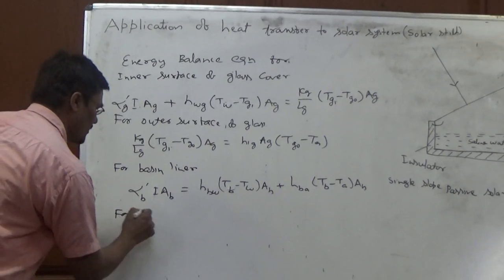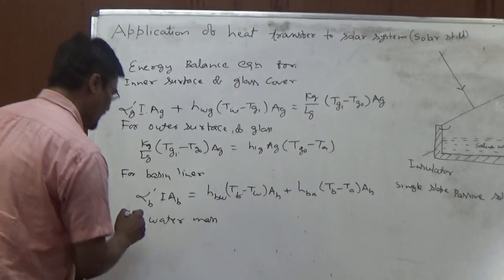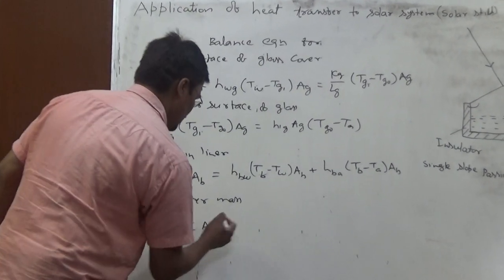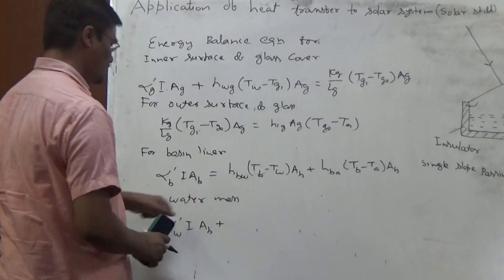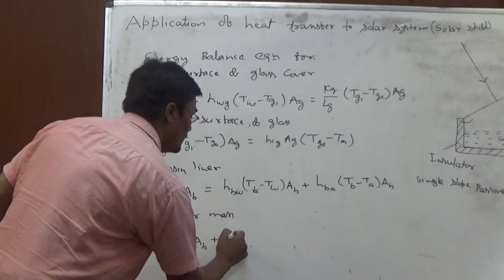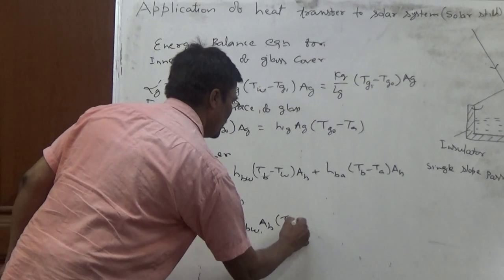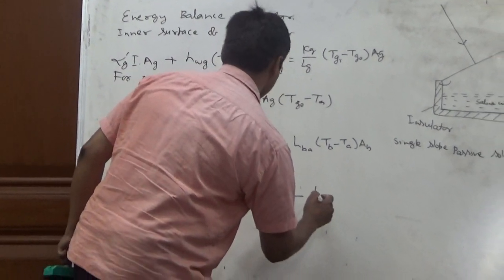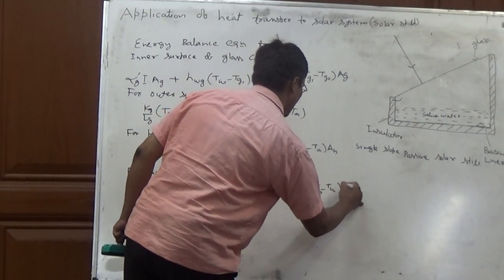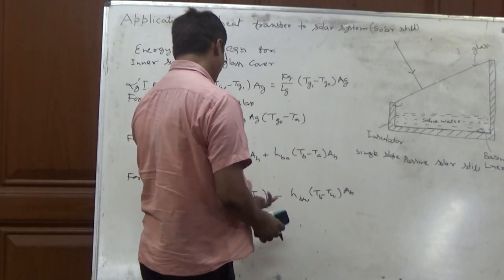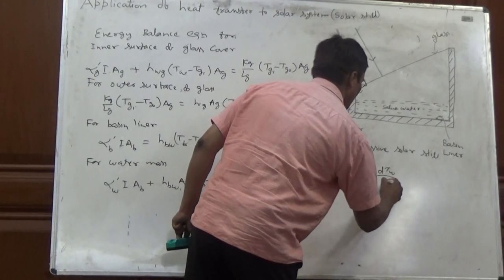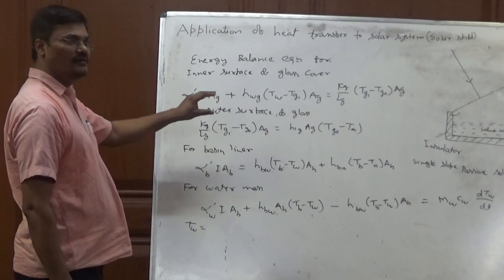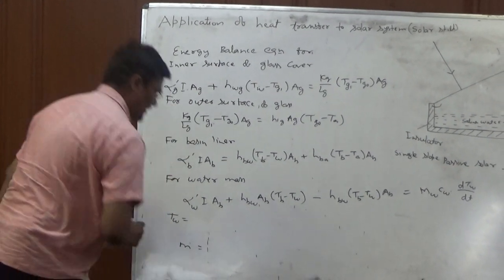Now, the last equation. The last equation, that is for water mass. So for water mass, you can say energy absorbed, alpha W dash, I into AB. This is the energy absorbed by direct solar intensity. And then from the basin liner, HBW, AB, TB minus TW. And heat loss from water surface to the inner surface of the glass. So this is HWG, TW minus TGI into AG. So this is the heat gain. This will be equal to MW, CW, DTW upon DT. So this is the final expression. We can find the expression for TW in terms of known values like I, alpha and T. And then we can find amount of water.